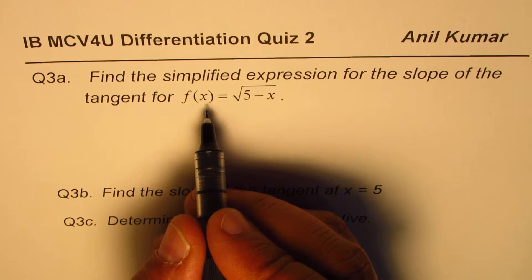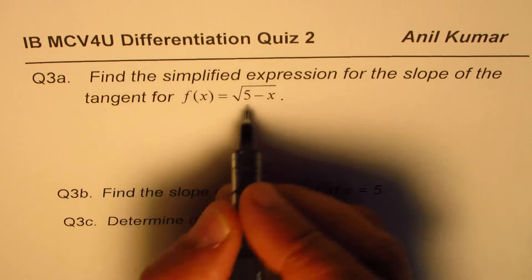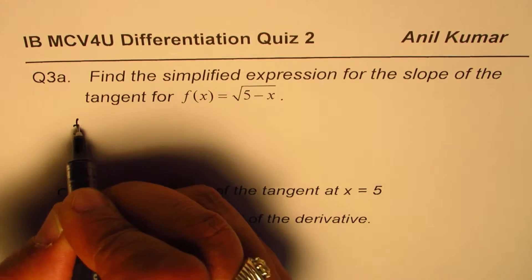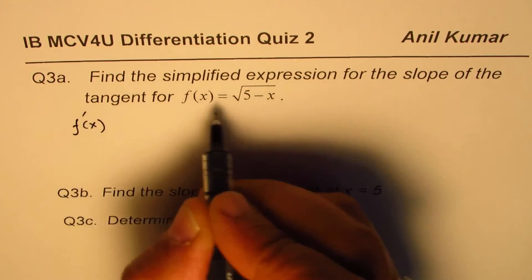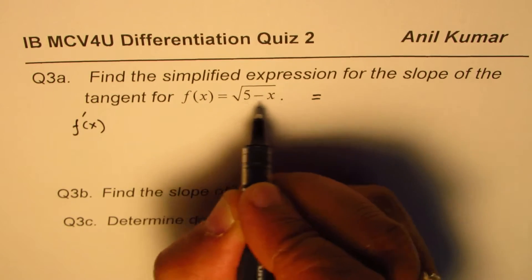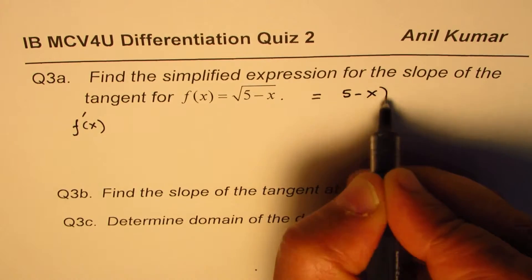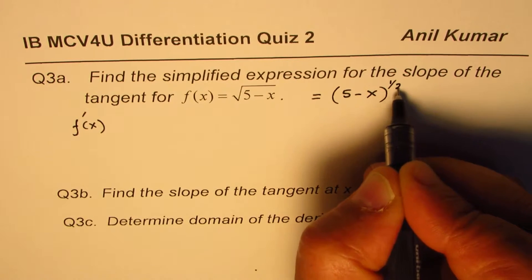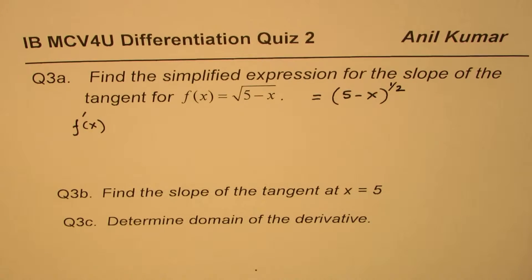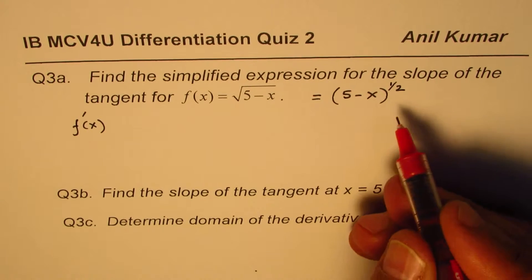So the derivative of this is f'(x). Now we could rewrite this in power form. We could write this as (5 - x) to the power of 1/2. Now it becomes simpler to find the derivative using the power rule.